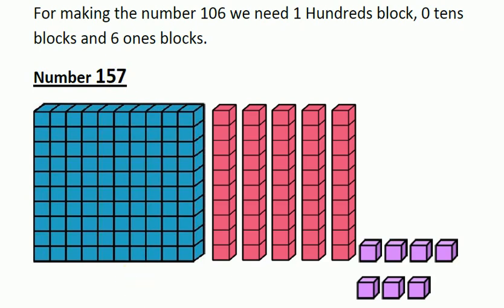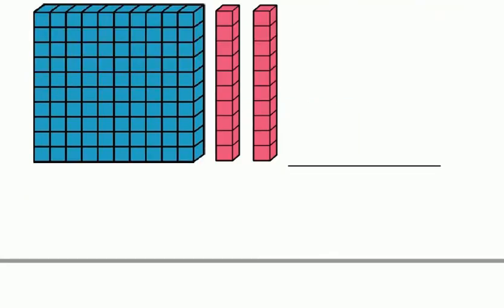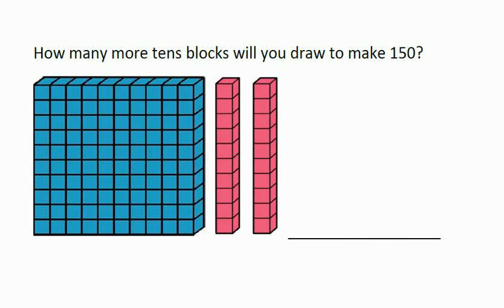Okay children, I hope the place values — hundreds, tens and ones — is clear now. Look at this picture. Can you guess the number by looking at the place value blocks? Yes, it is 120. One hundred block and two tens blocks makes 120. Now, the question is: how many more ten blocks will you draw to make 150? You have to change this number from 120 to 150.